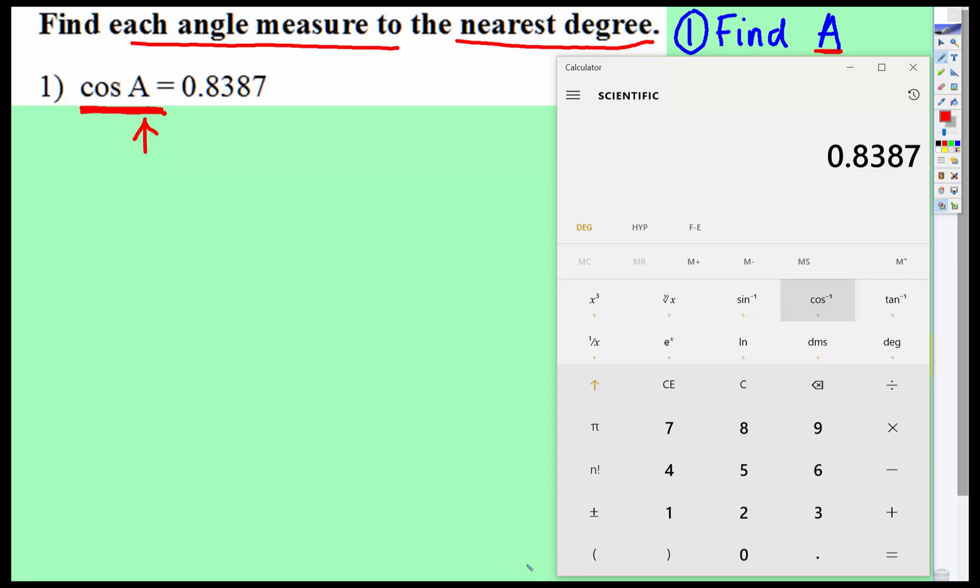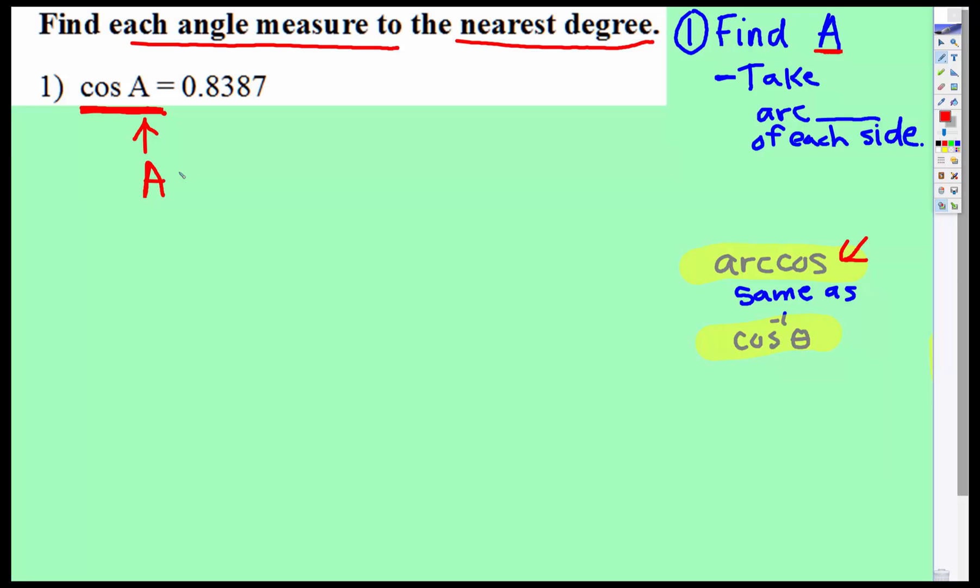Some professors like arc cosine, some like this symbol. You click that and look at what we have: 32.996. If you round that up, you'd get 33 degrees.